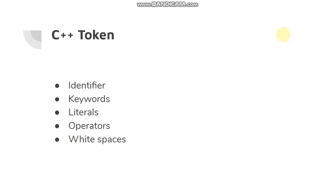And about C++ tokens. There are five kinds of tokens in C++. They are identifiers, keywords, literals, operators and white space.